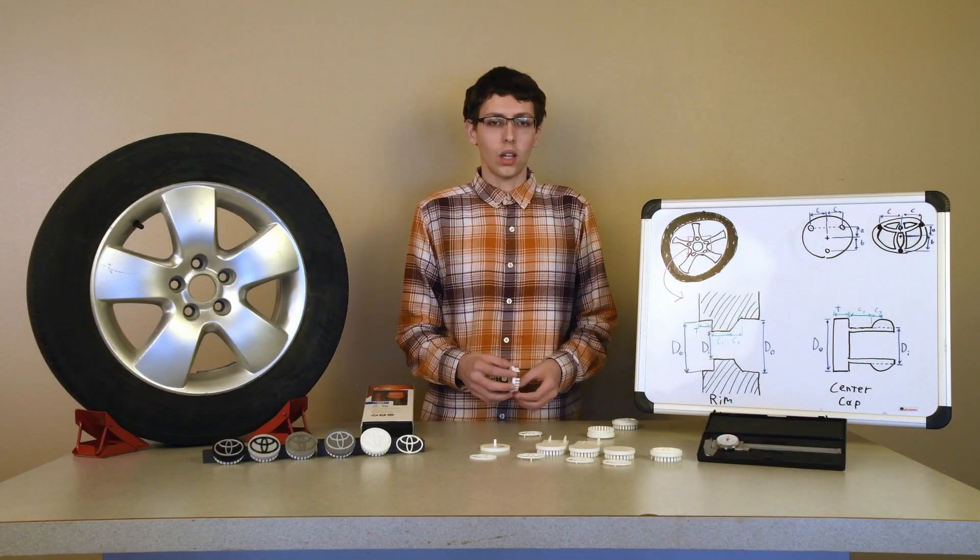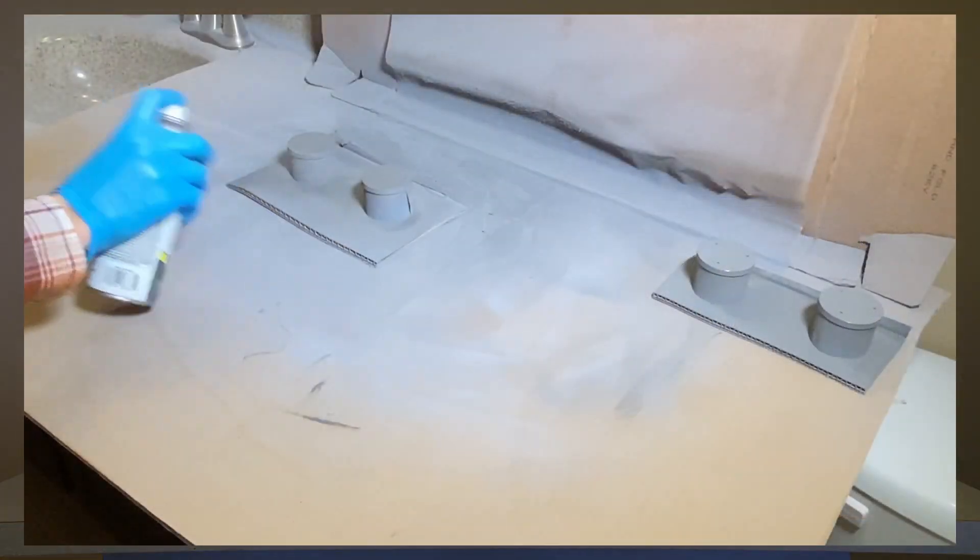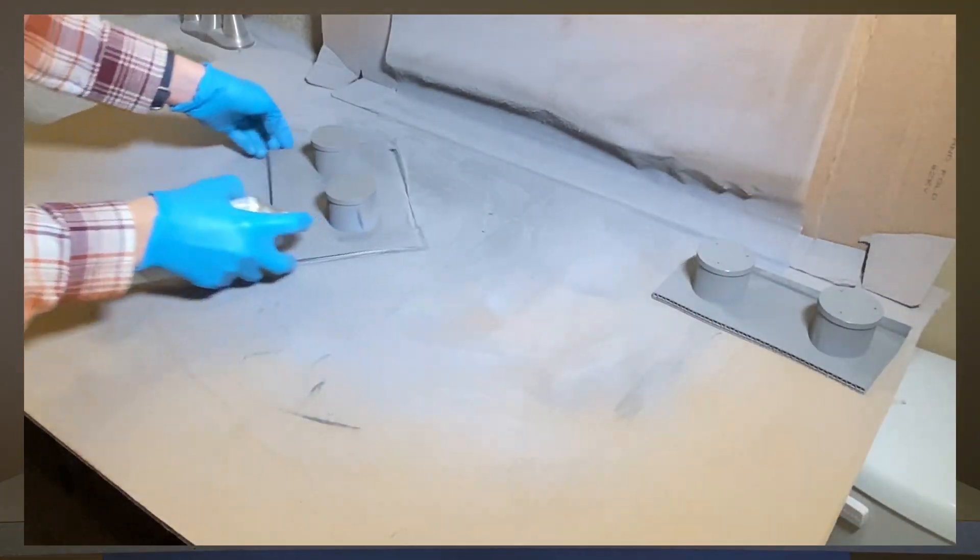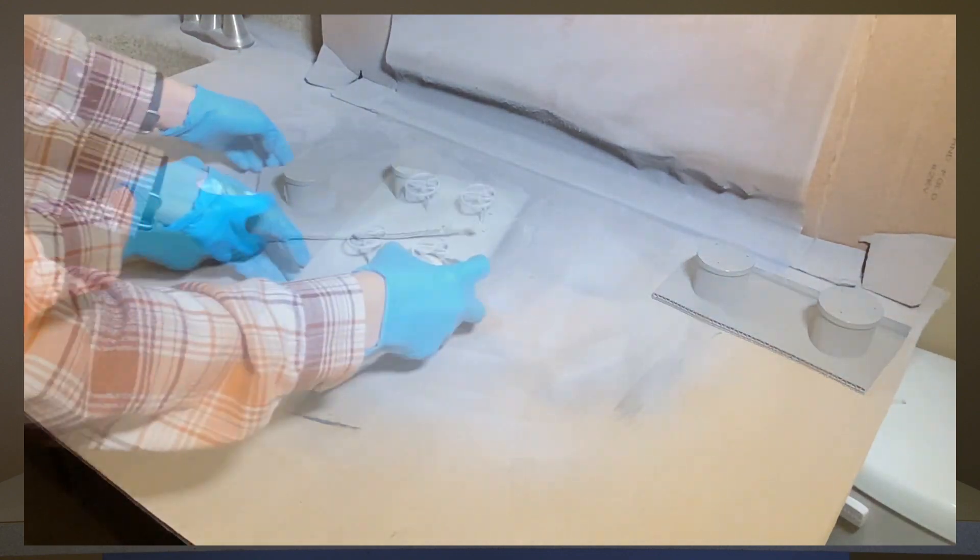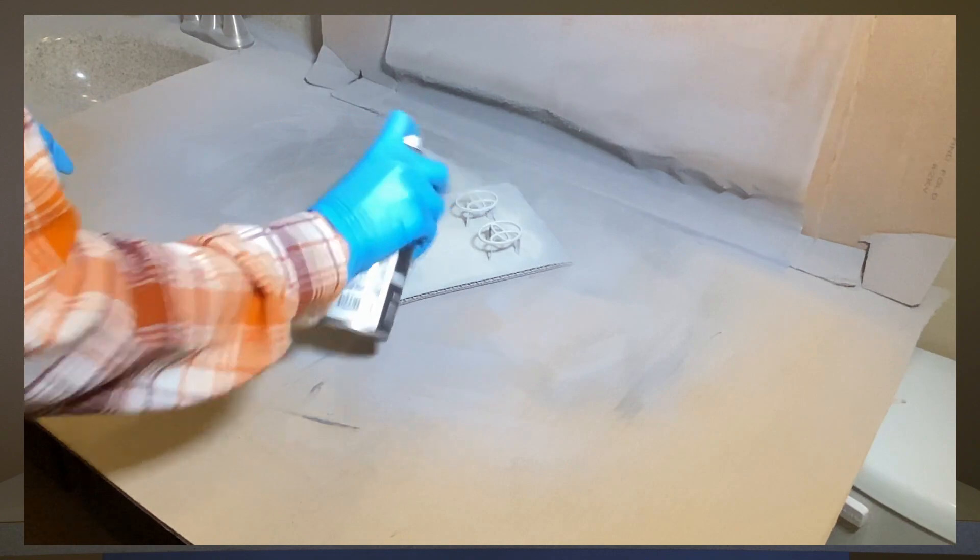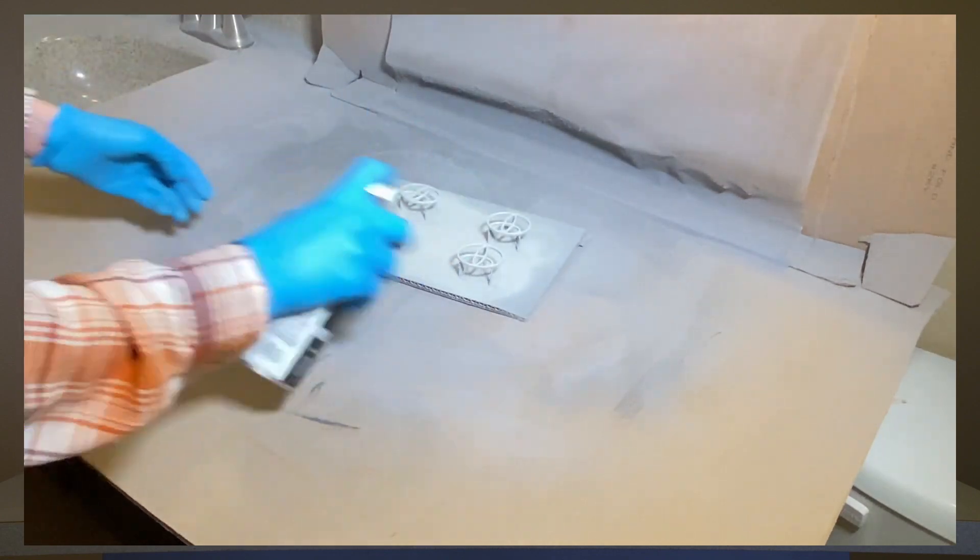The next step was, well that was the primer I guess I should have said, but the next step was paint, which is pretty straightforward. As for both of these, just read the can and follow it. And be tempted to just do one single heavy coat and try and resist that temptation, try and do light coats like the can says, but we're only human, right?